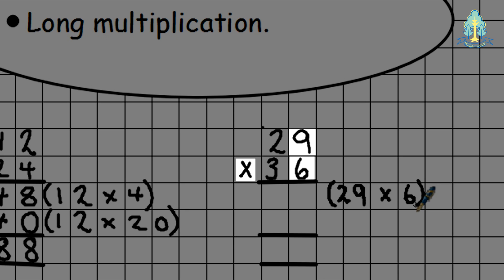So 6 times 9 is 54. We place the 4 in our units column and we'll carry our 5 over to remind the children to add this. We then look at 6 times 2, which is 12, and then remembering to add the 5 that we've carried. So 6 times 2 is 12, adding on the 5 gives me 17.